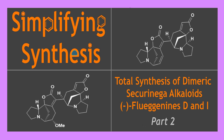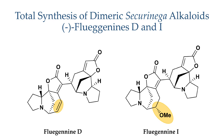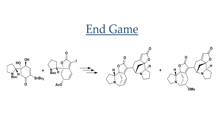Welcome back to Simplifying Synthesis, the channel where we look at complex organic chemistry and explain how it works. Today we are going to look at part two of the synthesis of Saccharinaga alkaloids. In the previous video we analyzed the structure of these molecules and looked at the construction of an electrophilic and a nucleophilic coupling partner, which formed the two sides of the molecule. So let's dive back in and see how this synthesis was completed.